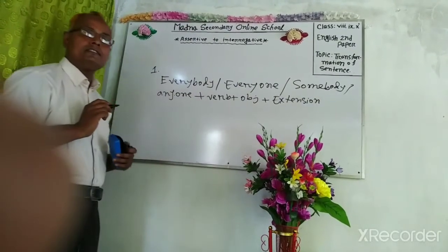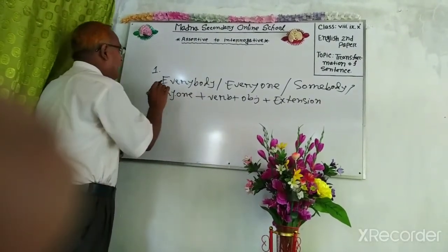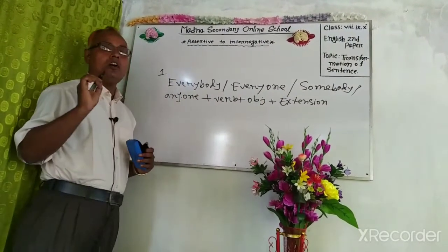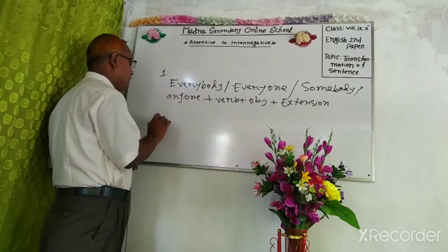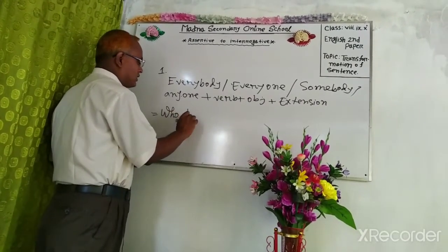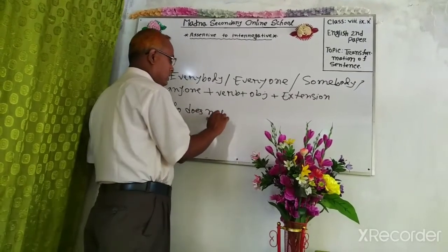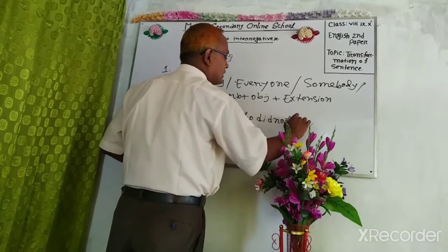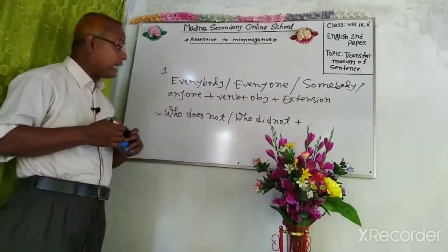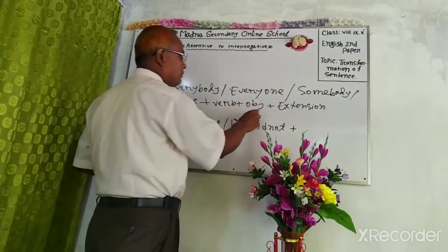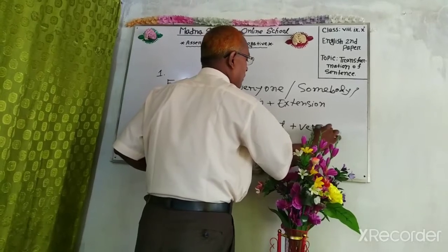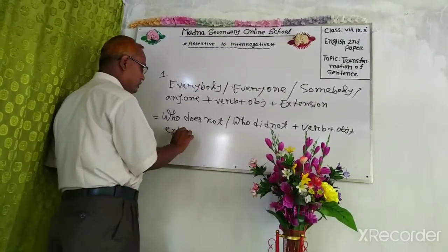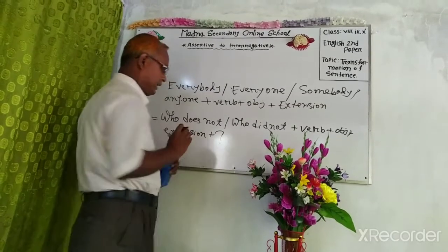Then the interrogative sentence will be: that word, such as everybody, everyone, somebody, anyone, will be omitted. Then you can use 'who does not' oblique 'who did not' according to the sentence tense. Then verb, plus object, plus extension, plus interrogative sign.